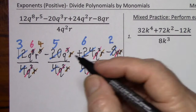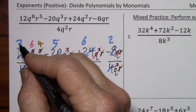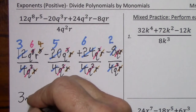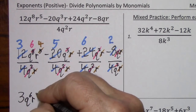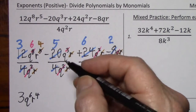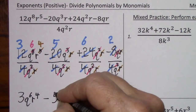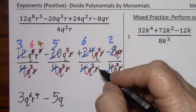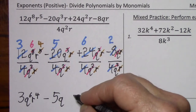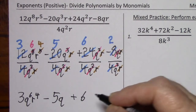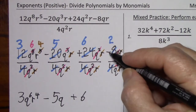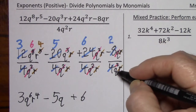So let's see what's left standing: 3q to the 6th r to the 4th, negative 5q, positive 6 — that's it for that fraction, no longer really a fraction — and negative 2 over q.